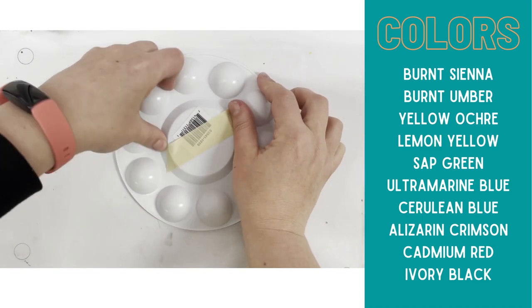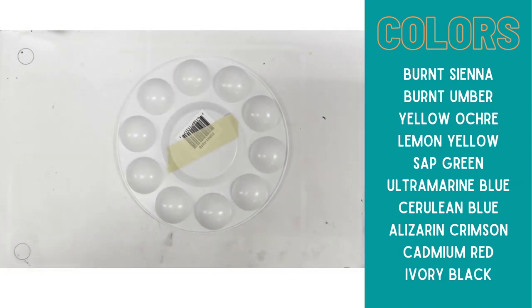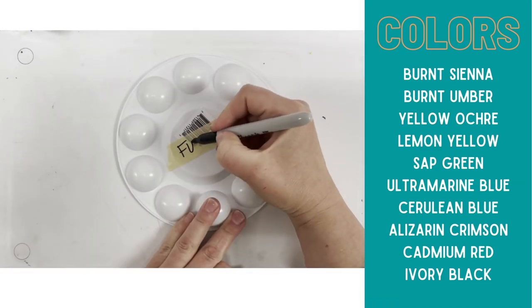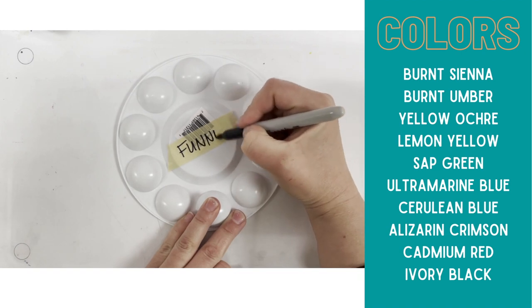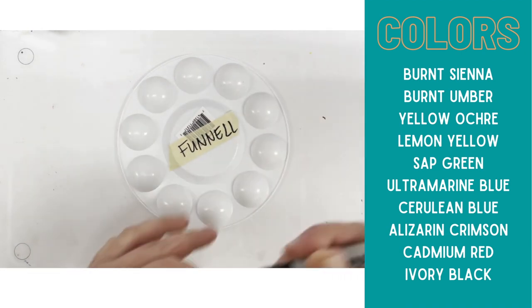Start by putting a piece of masking tape on the bottom of your palette and write your name in Sharpie. This will just help us keep track of whose palette is whose.